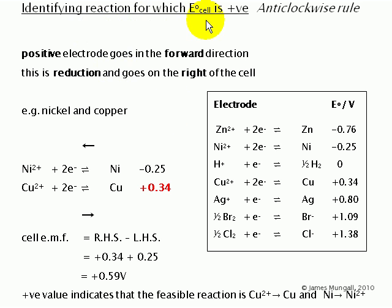Identifying the reaction for which E-cell is positive, sometimes called the anti-clockwise rule. To do this, we need to apply this rule: the more positive electrode goes in the forward direction. This is reduction and goes on the right.